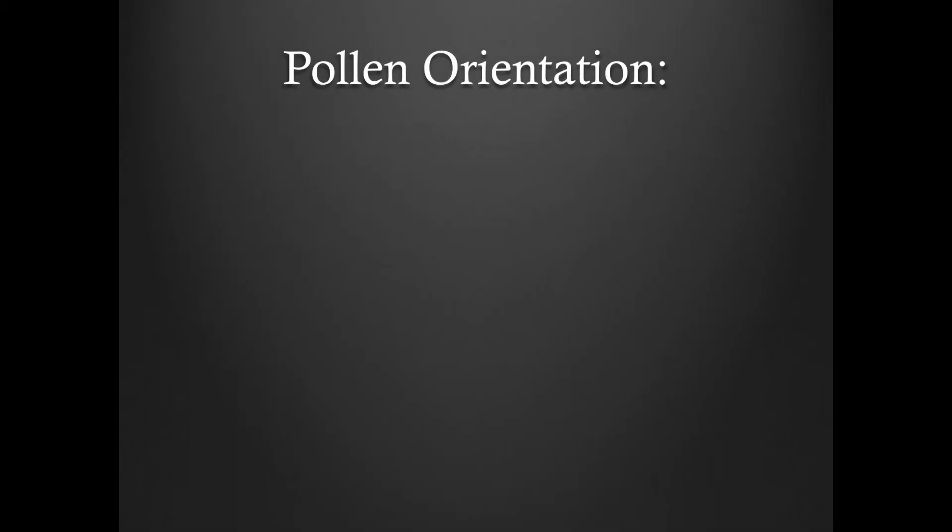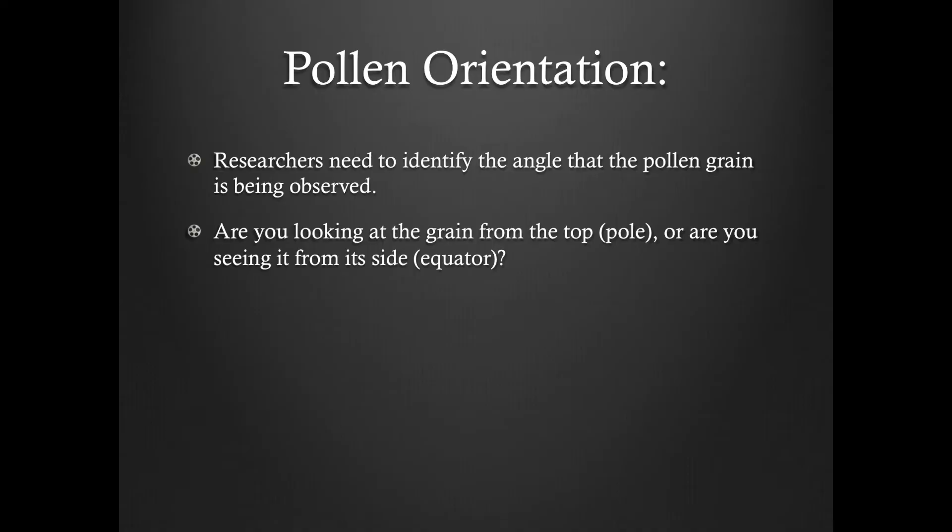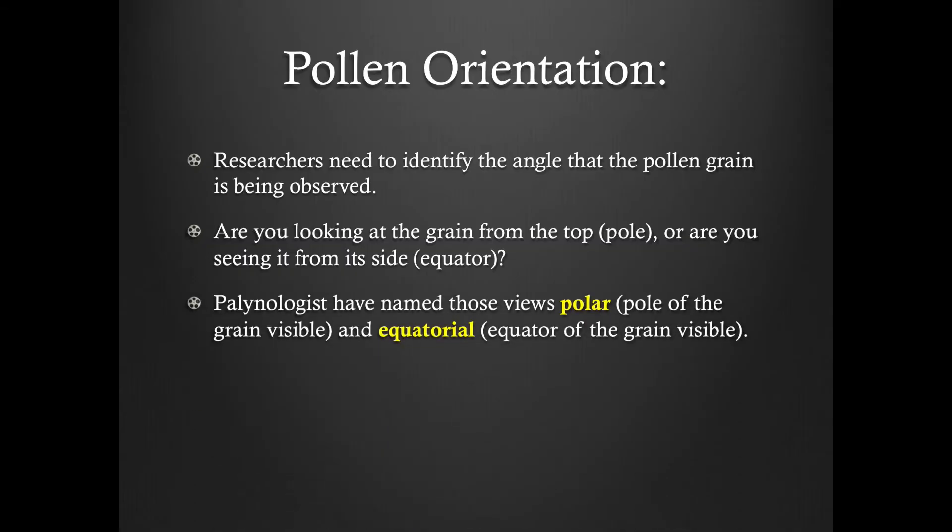Now let's talk about how to properly identify a pollen grain's orientation. When looking at a pollen grain, researchers need to be able to understand and identify which angle of the grain they are seeing. Are you viewing the grain from the top or bottom, which are considered to be the poles? Or are you seeing the grain from the side, which has the equator visible? Those orientations are known as polar and equatorial.